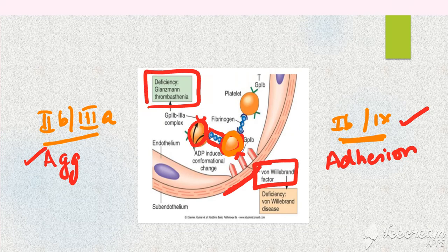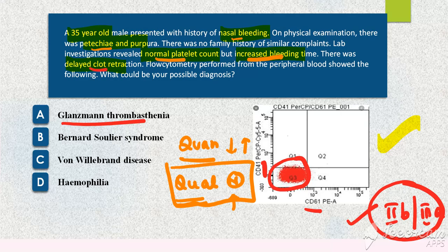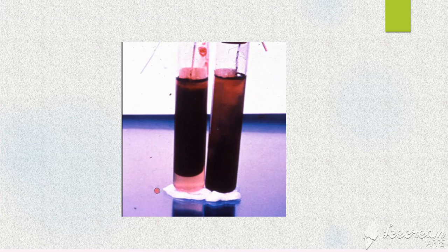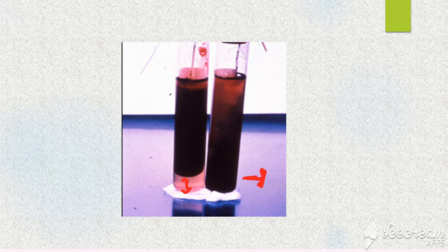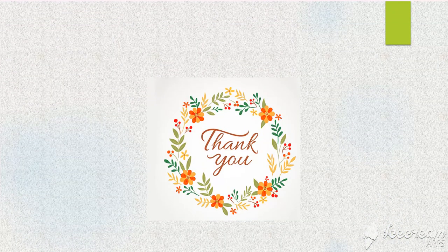So your answer here is Glanzmann thrombasthenia. One more clue is delayed clot retraction. This is how delayed clot retraction appears: you collect the blood and keep it in a test tube. Normally it will retract from the walls, whereas in GT it will not retract because of the defective receptor. Your platelet is not going to aggregate. So this is about Glanzmann thrombasthenia. Thank you.